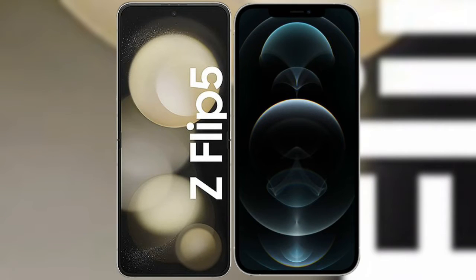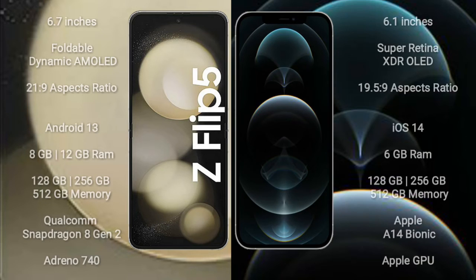I will compare the new Samsung Galaxy Z Flip 5 with iPhone 12 Pro. Samsung Galaxy Z Flip 5 comes with a 6.7-inch foldable dynamic AMOLED display and aspect ratio 21:9. iPhone 12 Pro comes with a 6.1-inch Super Retina XDR OLED display and aspect ratio 19.5:9.